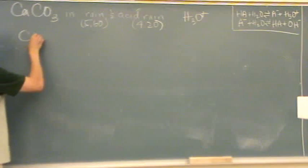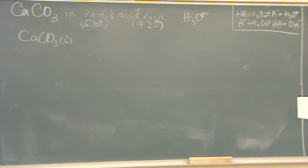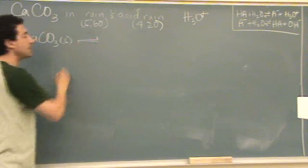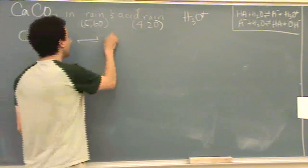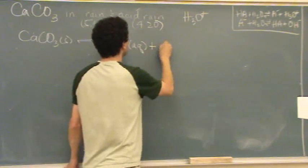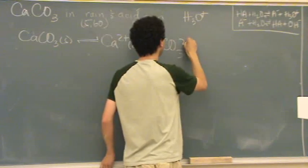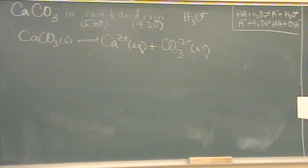Calcium carbonate, that's a solid. You need to be able to write your KSP. So you should be able to do this for anything. Calcium 2 plus aqueous plus carbonate. You just separate the ions. They both go to the aqueous phase, starts off in the solid phase.